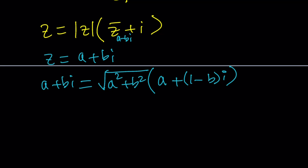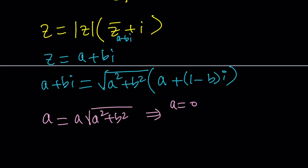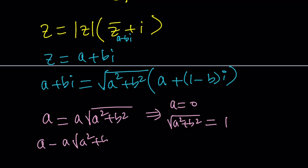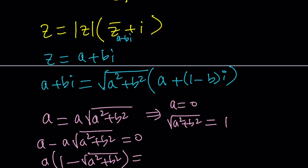The real part on the left is A, and on the right is A times the square root of A squared plus B squared. This implies two things: either A equals 0, or the square root of A squared plus B squared equals 1. You could subtract this from both sides, then factor out an A, and by setting each factor equal to 0 you get the exact same results.